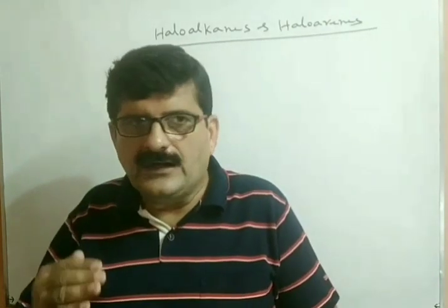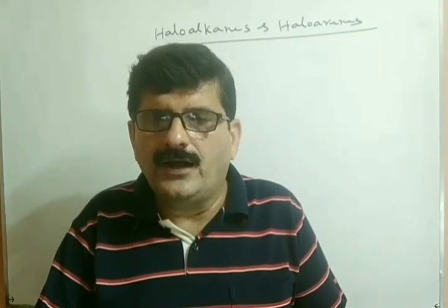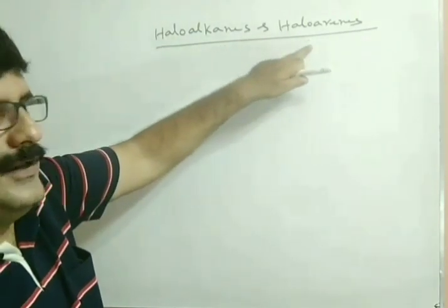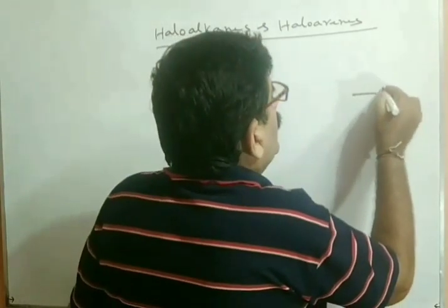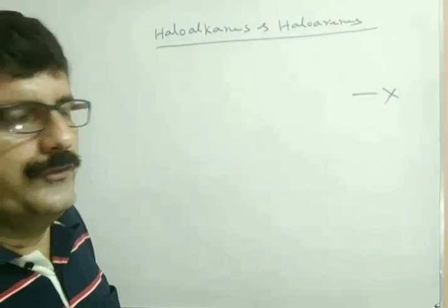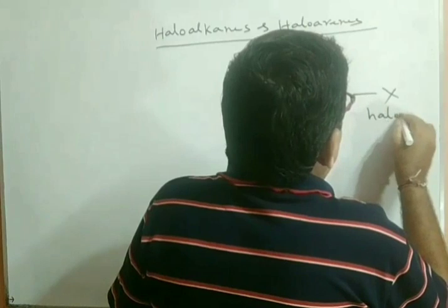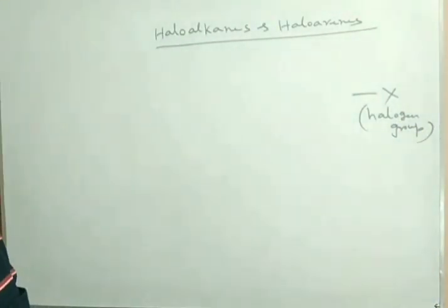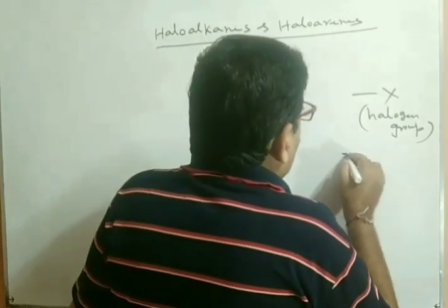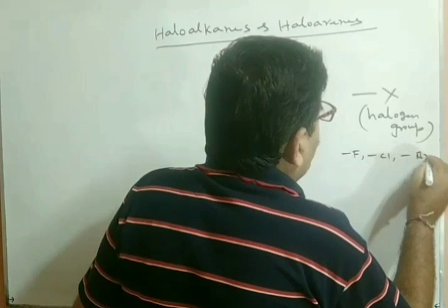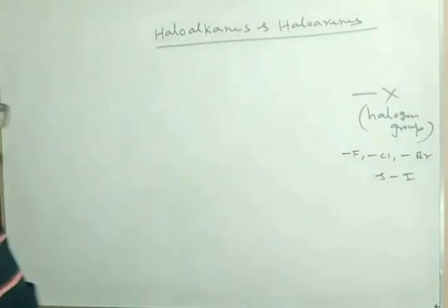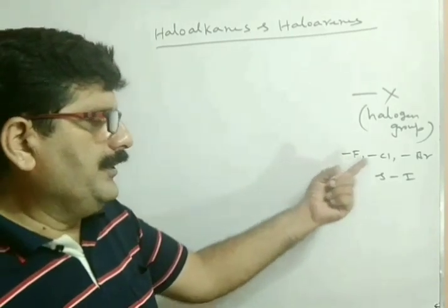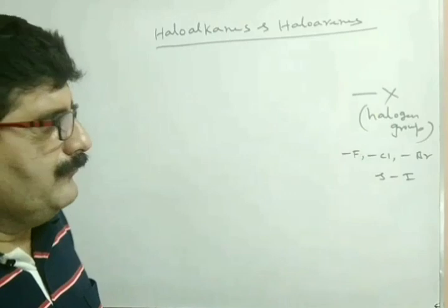In your lesson, the heading is haloalkanes and haloarenes. The X group is said to be the halogen group. In the halogen group, generally we consider fluorine, chlorine, bromine and iodine. The most common are Cl and Br. But you can also use fluorine and iodine. This commonly used group is called the halogen group. If we consider aliphatic hydrocarbon and one hydrogen atom is replaced by any halogen atom, a new compound is formed.